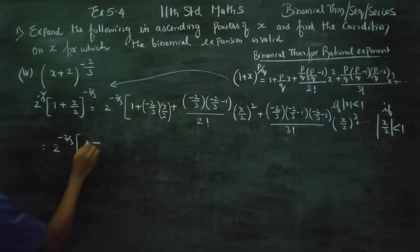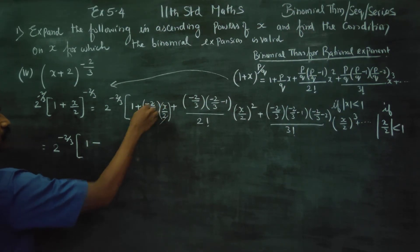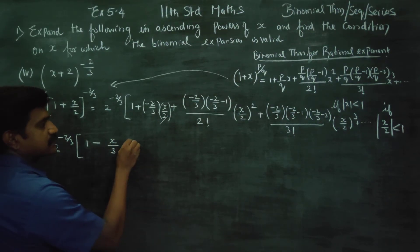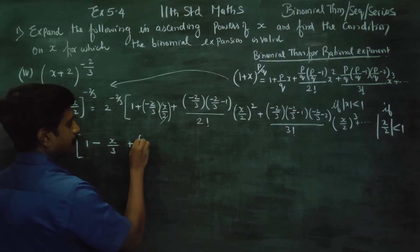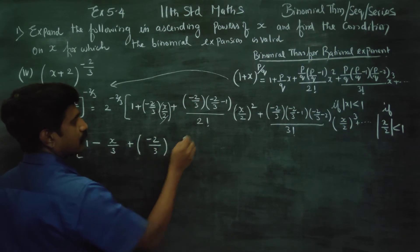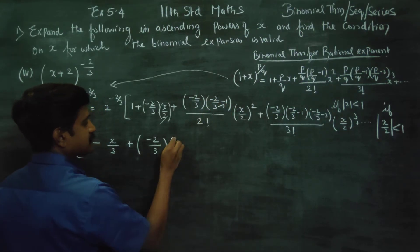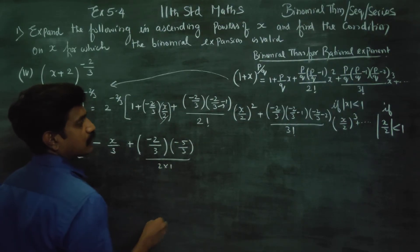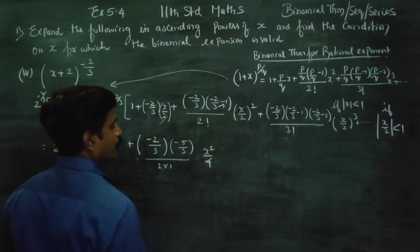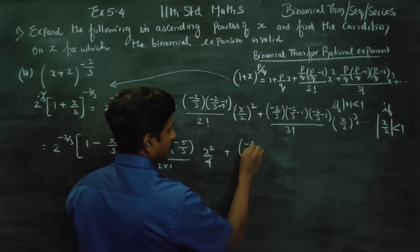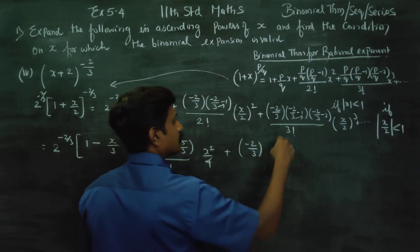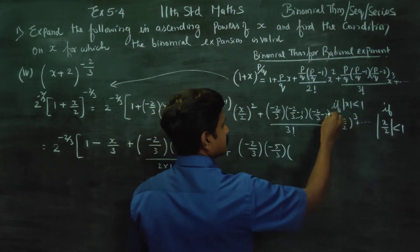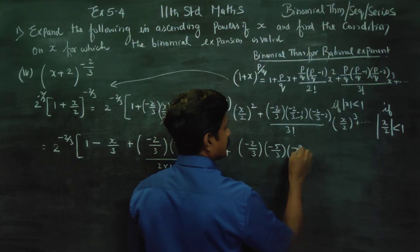1 plus — the minus 2 cancels — so the first term gives x by 3. Next, plus: minus 2 by 3, then LCM gives minus 5 by 3, divided by 2 factorial which is 2 into 1, times x squared by 4. That simplifies to minus 5 by 3 divided by 2, times x squared by 4. 6 minus 2 is minus 8 by 3.